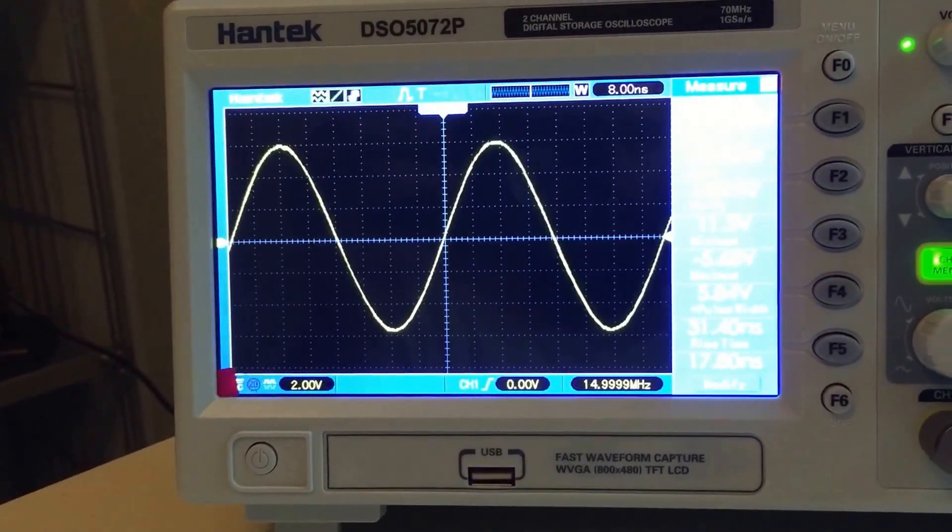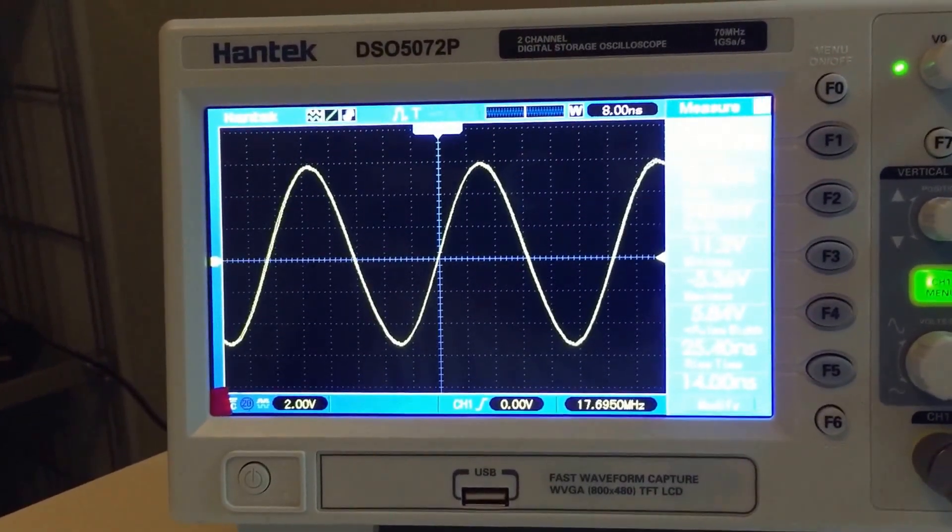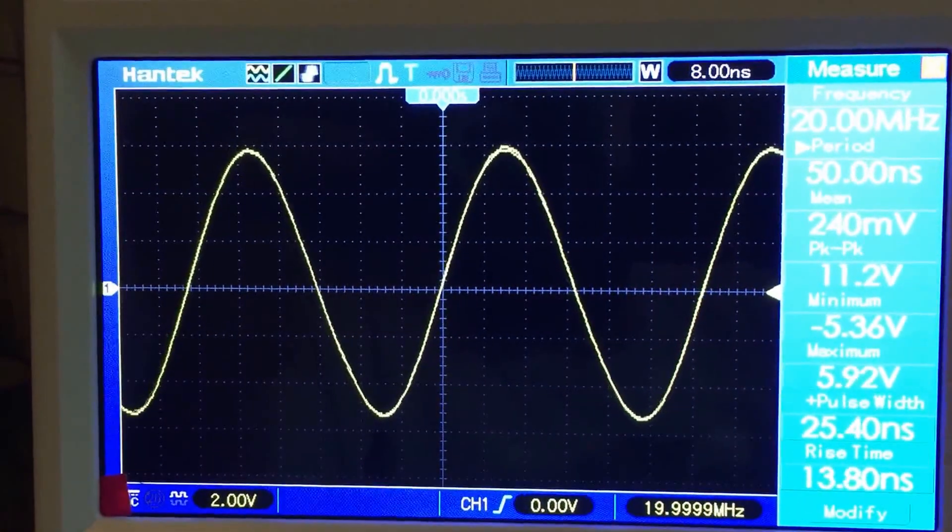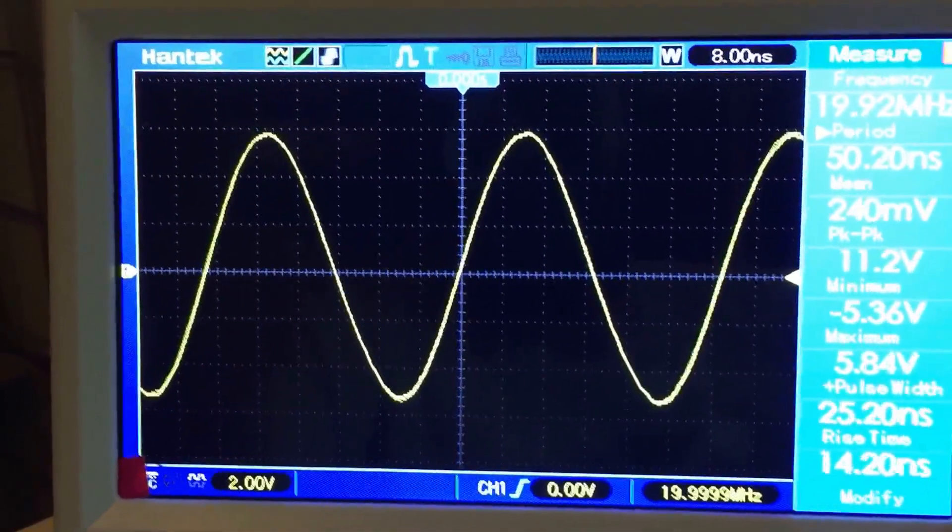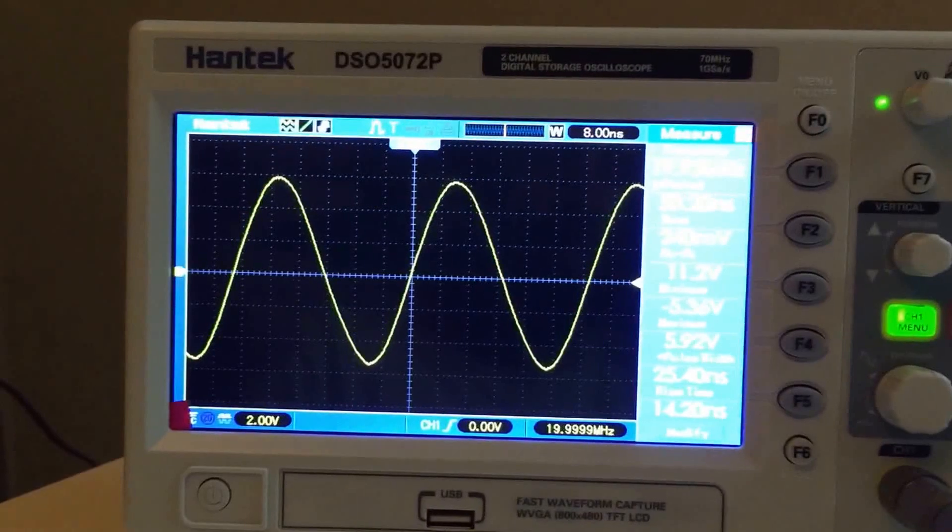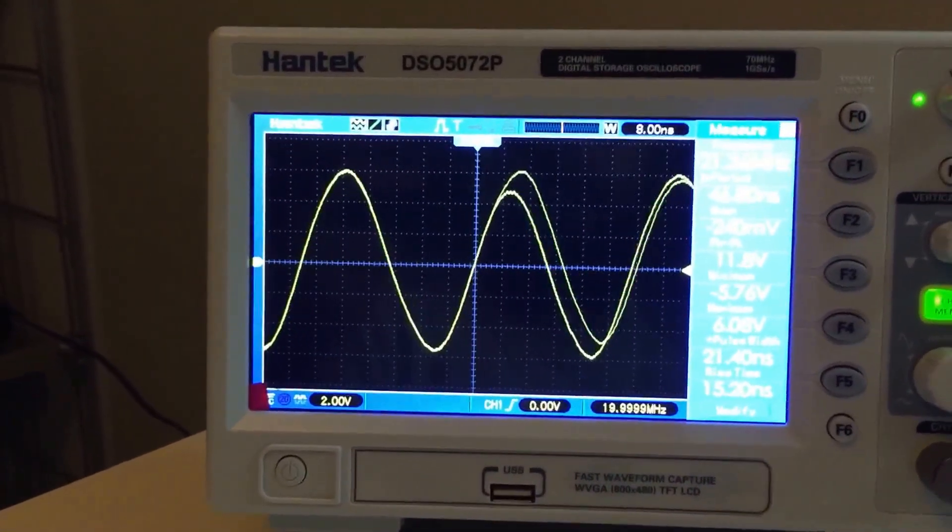There we go, we're maxed out and showing 19,999 kilohertz, which looks like a nice sine wave. But now if we look at the square wave, that's the square wave.